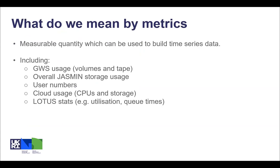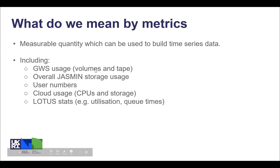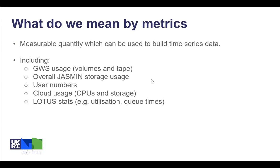A metric is a measurable quantity which can be used to build time series data. Examples include the usage of group workspaces including volumes and tape, the overall storage of Jasmine, user numbers for specific services such as the number of users on group workspaces or in cloud tenancies, other cloud usage stats such as the number of CPUs and storage utilization, and we're also planning to add load stats such as utilization and potentially queuing times.